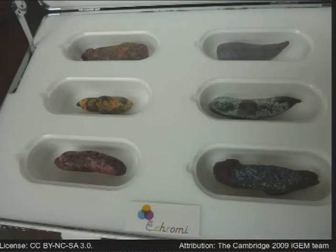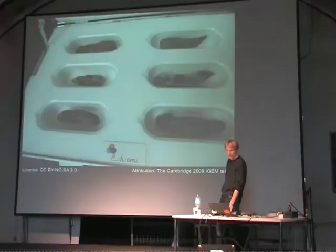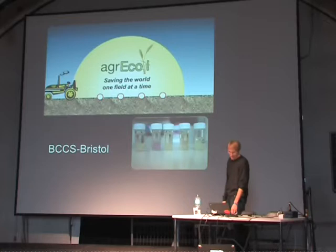An imagined application of E. chromi is that it would live in your gut and have detectors for all the things that make you sick in different ways. Based on this, it would produce different colors, so you could very easily see if something's wrong with you — and not just that something is wrong, but have an idea what it is.